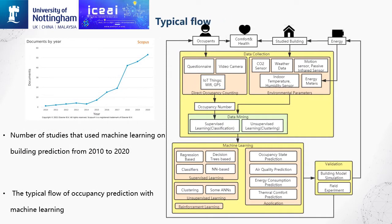This picture shows the number of studies using machine learning for building prediction in the last decade, and it is clear that the number of studies has risen significantly in the last five years. After reviewing all 115 papers, I have compiled a typical flow of occupancy prediction using machine learning. Usually, the steps can be divided into data collection, machine learning, and validation.